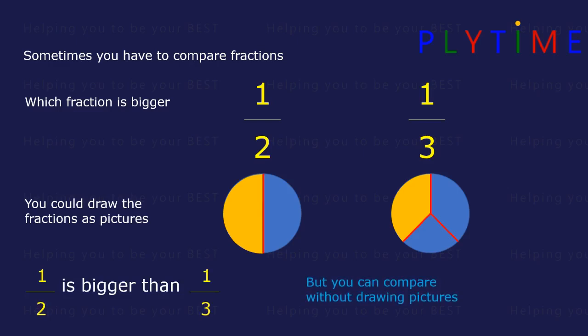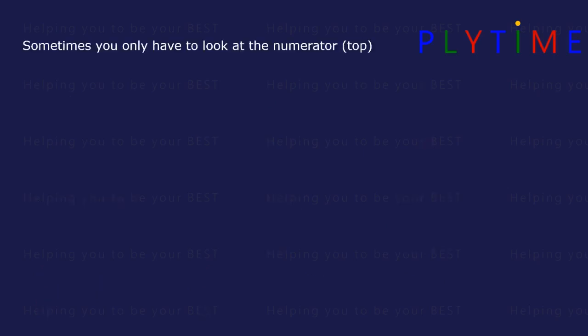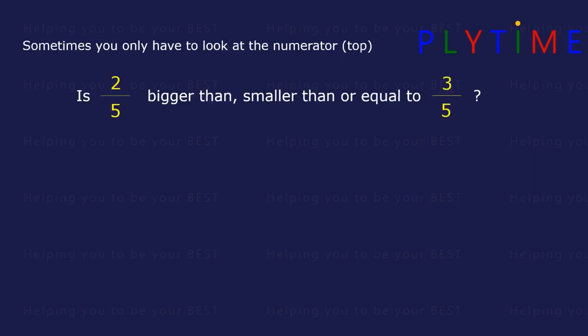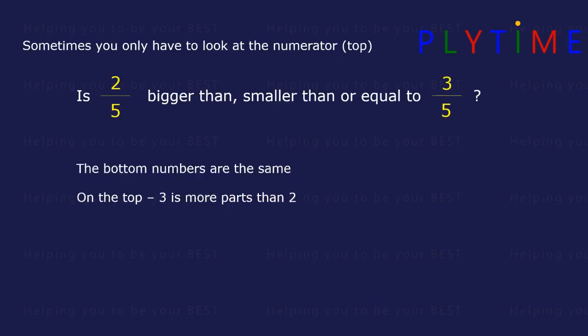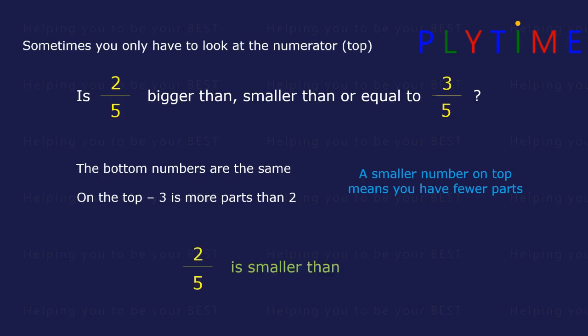You can compare without drawing pictures. Sometimes you have to look just at the numerator on the top. Is two fifths bigger than, smaller than, or equal to three fifths? The bottom numbers, or the denominators, are the same. And on top, three parts is more than two parts. A smaller number on the top means you have fewer parts. So two fifths is smaller than three fifths.